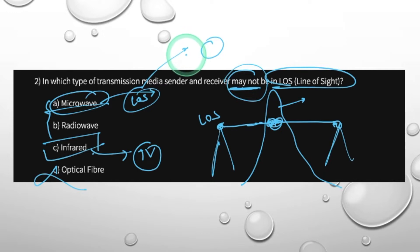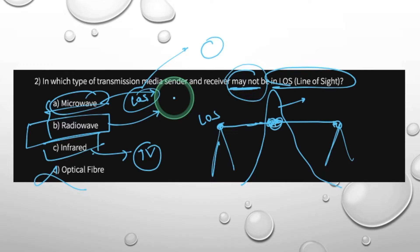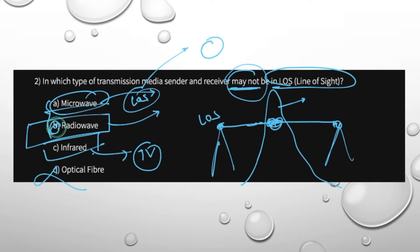If you have a line-of-sight with microwave, you can find a radio wave. If you have a radio wave, you can find an FM station or Wi-Fi signal.